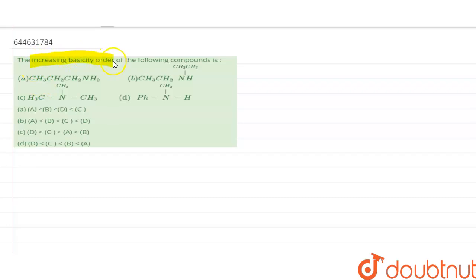The increasing basicity order of the following compounds: primary amine, secondary amine, tertiary amine, and amine with the electron withdrawing group.